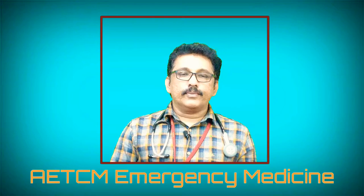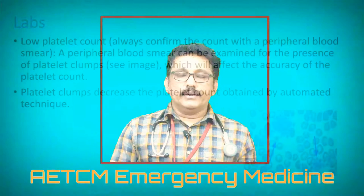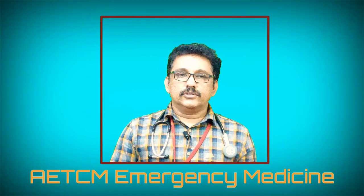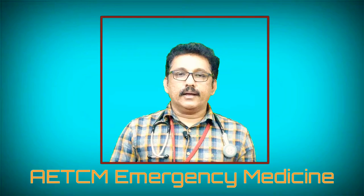For lab investigations, a complete blood count will show very low platelet counts. Importantly, always request a peripheral blood smear, because automated machines may count platelet clumps as single platelets, leading to falsely low counts. A peripheral smear allows accurate manual counting.